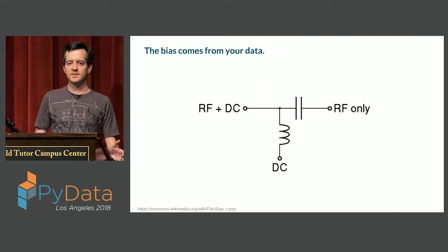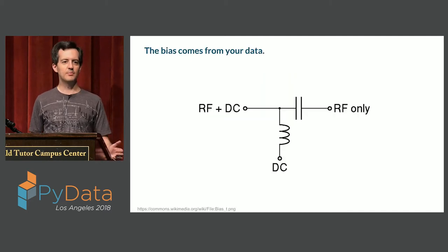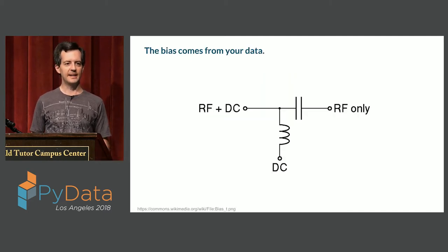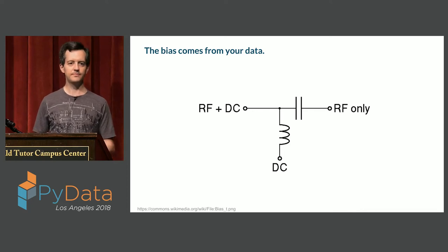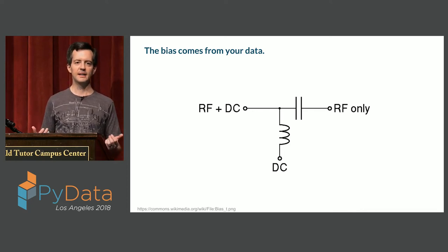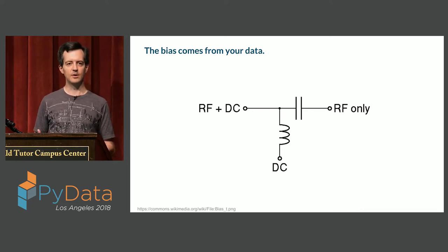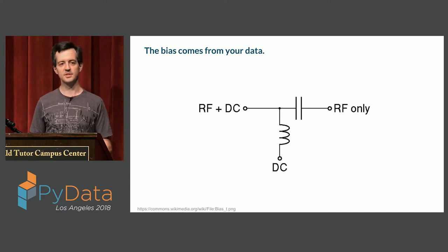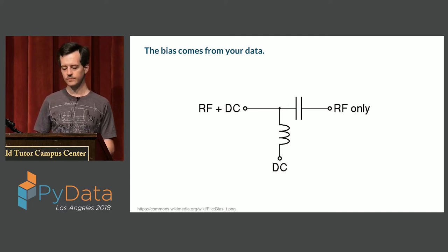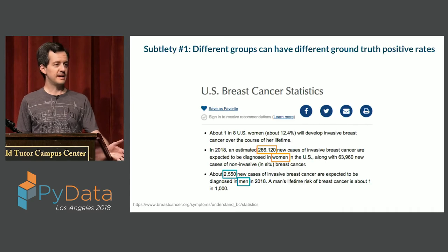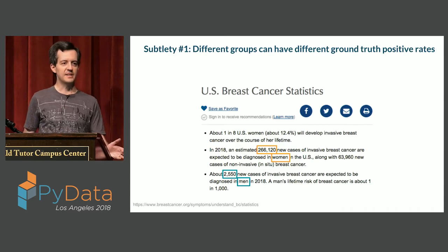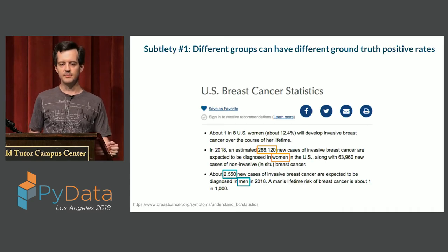Where does bias come from? You're training your models on data — where does the data come from, what makes up the data? You have to look at whether the data are balanced or imbalanced and the potential sources of bias in the data. There are different ways that the data could be biased or imbalanced.